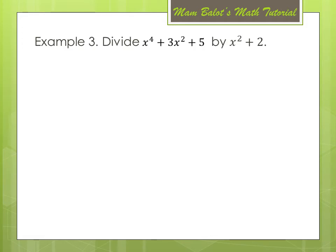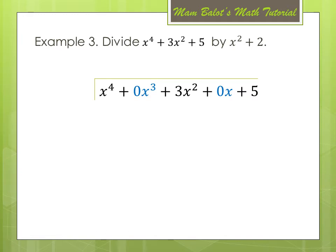Now let's have another example using the long division method. We have: divide x to the 4th plus 3x squared plus 5 by x squared plus 2. Following the steps, we put the dividend inside the inverted L shape: x to the 4th plus 0x cubed — inserting 0x cubed since the exponent 3 is missing — plus 3x squared plus 0x since x is also missing, and then plus 5. The divisor outside is x squared plus 0x plus 2, inserting 0x since x is also missing in the divisor.